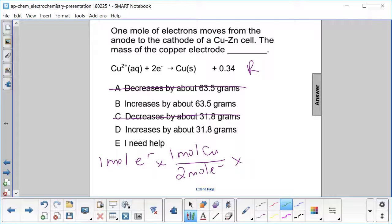And then we need to just multiply by the molar mass of copper, which is 63.5 grams per mole of copper.